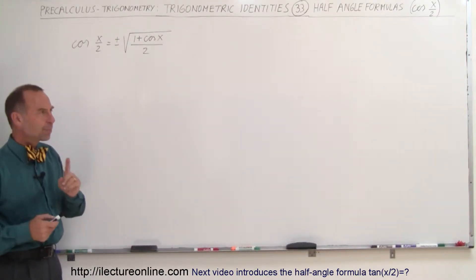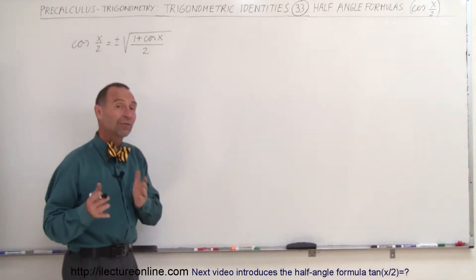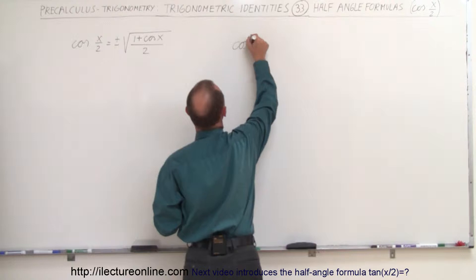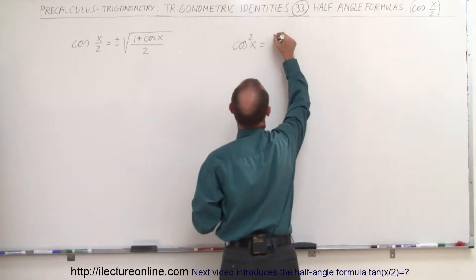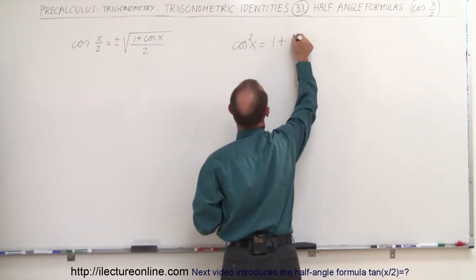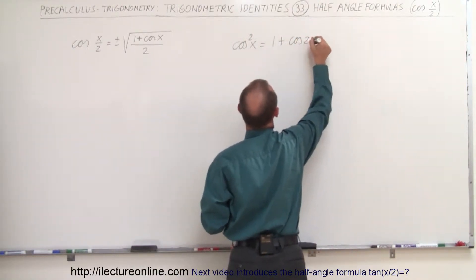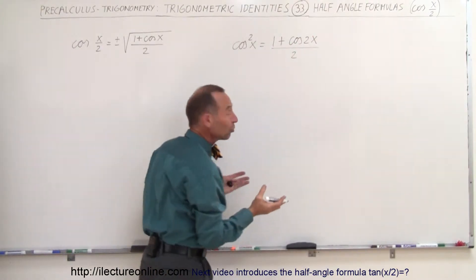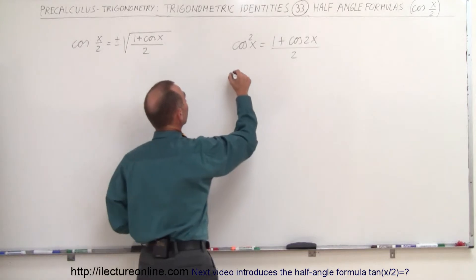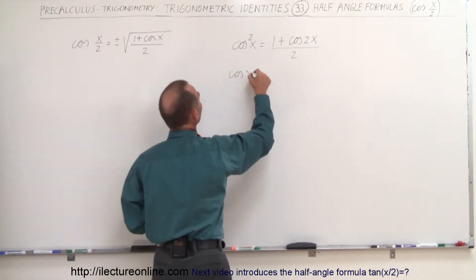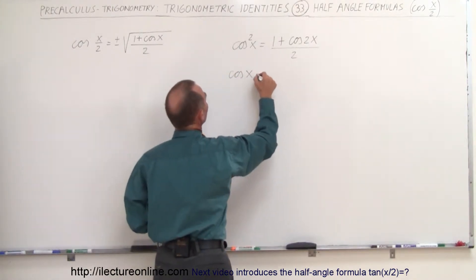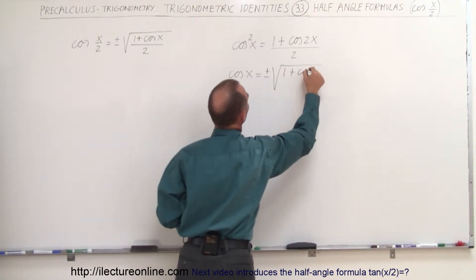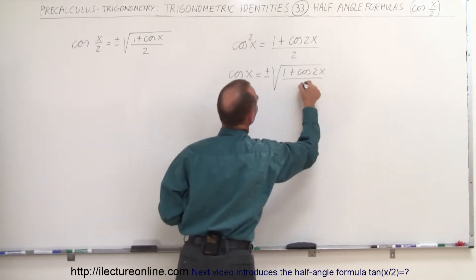Where did that come from? Well, we use the same kind of principles we did for the sine of x. We know that the cosine squared of x is equal to 1 plus the cosine of 2x divided by 2. So now we take the square root of both sides. When we do that, we get the cosine of x is equal to plus and minus the square root of 1 plus the cosine of 2x divided by 2.